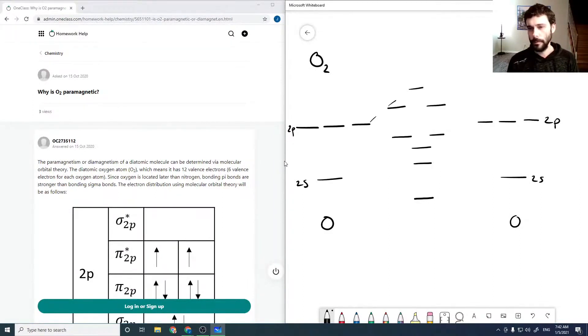Sigma, so we get sigma, sigma star, sigma, pi, pi star, sigma. So this is the ordering of the levels for oxygen.